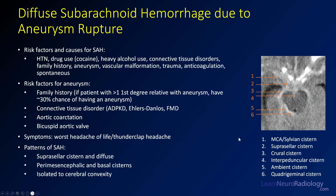Diffuse subarachnoid hemorrhage from aneurysm rupture has a lot of risk factors: hypertension, blood drug use, alcohol use, connective tissue disorders like Marfan syndrome. Other risk factors for having an aneurysm include family history, connective tissue disorder, aortic coarctation, or bicuspid aortic valve. Regarding patterns of subarachnoid hemorrhage: suprasellar cistern and diffuse is what we're seeing here. If it's in front of the brainstem, that's perimesencephalic, more likely a posterior aneurysm. If it's over the cerebral convexes, that's more distal and more likely to be trauma. You can see the blood out in the sylvian cistern, suprasellar cistern, crural cistern, interpeduncular space between the peduncles, and ambient cistern coming around to the quadrigeminal plate.